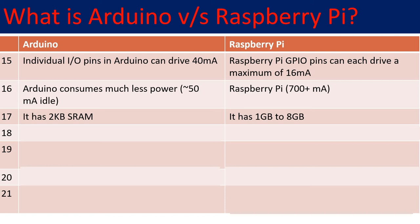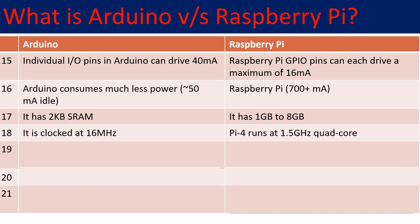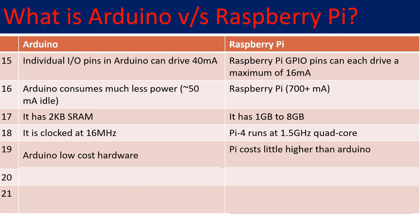Arduino has onboard storage of 2KB of SRAM, whereas Raspberry Pi 4 has RAM ranging from 1GB to 8GB depending on the version. Arduino is clocked at 16MHz using a crystal oscillator, whereas Raspberry Pi 4 runs at 1.5GHz with a quad-core processor.